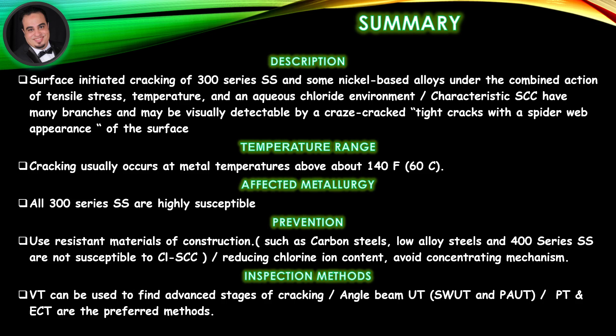Prevention: Use resistant materials of construction such as carbon steels, low alloy steels, and 400 series stainless steel, which are not susceptible to chloride stress corrosion cracking. Reduce chlorine ion content and avoid concentrating mechanisms. Inspection methods: VT can be used to find advanced stages of cracking; angle beam UT, SWUT, and PAUT, as well as PT and ECT, are the preferred methods.